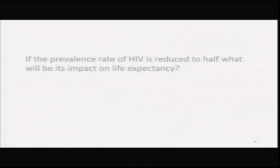If the prevalence rate of HIV is reduced to half, what will be its impact on life expectancy? Such questions can be answered by building multiple decrement life tables, using life tables by cause of death. By applying a mathematical model and eliminating HIV by 50 percent, we can recalculate life expectancy in that population.